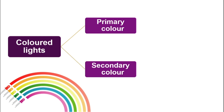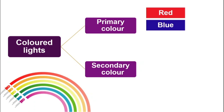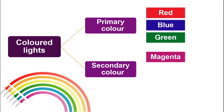First of all, the colored lights can be divided into two different categories. There are the primary colors and also secondary colors. The primary color lights are red light, blue light, and also green light. For secondary colors, we have magenta, cyan, and also yellow lights — three colors each.